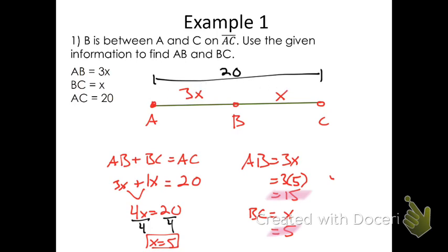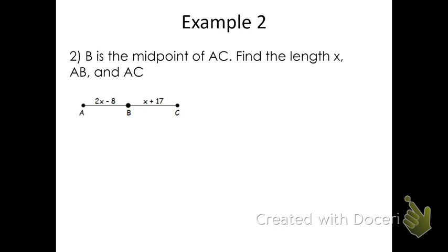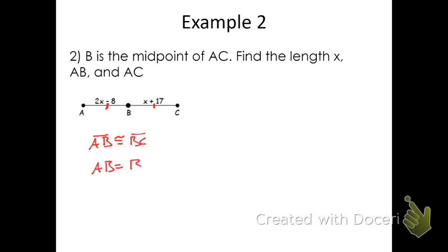Let's do another example. This one's going to use the idea of midpoint. It says that B is the midpoint of AC. Find X, AB, and AC. They tell me that B is the midpoint, so we know that AB must be congruent to BC. If AB is congruent to BC, that means the length of AB equals the length of BC. These statements say the same thing — just different notations. Therefore, we know that 2X minus 8, which represents the length of AB, must be equal to X plus 17, which is the length of BC.